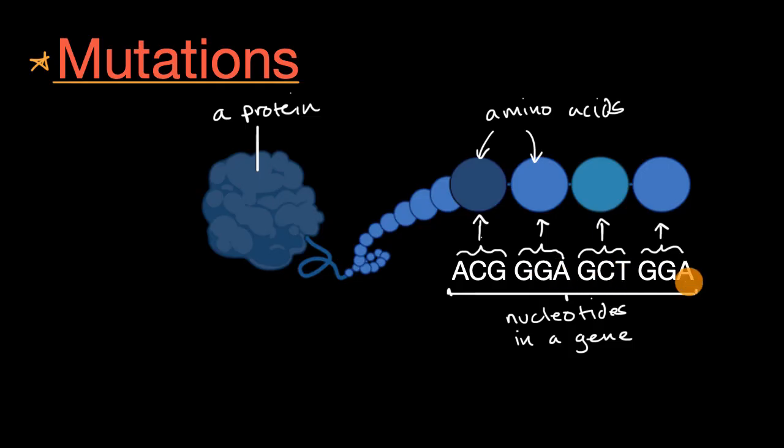Now, where do these mutations come from? Well, there are sometimes errors when DNA is copied, but can also happen from environmental influences like radiation or other things.